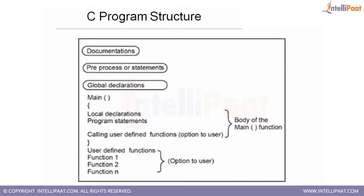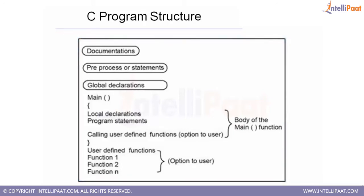Let's get started with the structure of a C program. The first section of a C program is documentation — this is not a mandatory section, but it always helps to understand what your C program is all about. Anybody reading your C file can get a first-level understanding of what your program does, what inputs it takes, and what output it gives. Next, we have a section called preprocessors, which is a set of library functions that you are using in your C program.